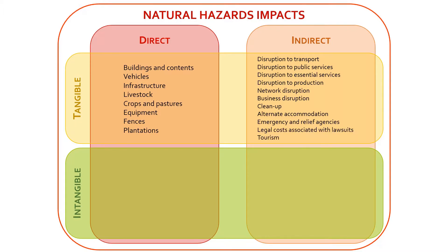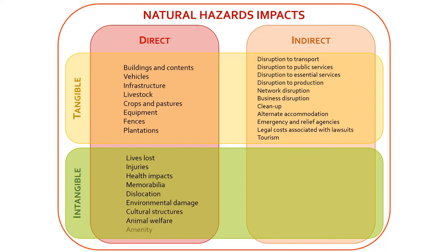Intangible direct impacts include lives lost, injuries, other health impacts, memorabilia, dislocation, environmental damage, cultural structures, animal welfare, amenity, etc. And examples of intangible indirect impacts include stress and anxiety experienced after the event or long after the event, disruption to living, community cohesion and connectedness that may be lost, erosion, etc.